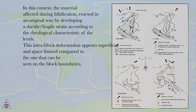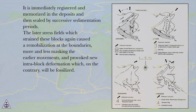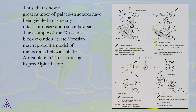In this context, the material affected during lithification reacted in an original way by developing a ductile/fragile strain according to the rheological characteristics of the levels. This intra-block deformation appears superficial and space-limited compared to that seen on the block boundaries; it is immediately registered and memorized in the deposits, then sealed by successive sedimentation periods. The later stress fields which strain these blocks again caused remobilization at the boundaries, more or less masking the earlier movements, and provoke new intra-block deformation which will be fossilized. Thus, a great number of paleo-structures have been yielded to us nearly intact for observation since Jurassic. The example of the Usaltia block evolution at Late Uprisian may represent a model of the tectonic behavior of the African plate in Tunisia during its pre-Alpine history.